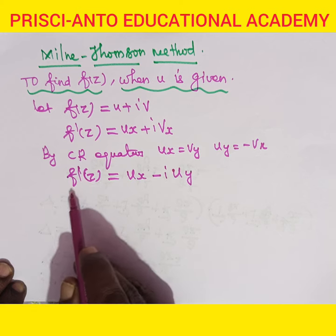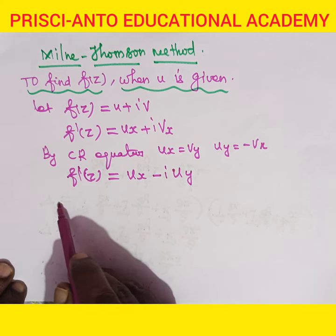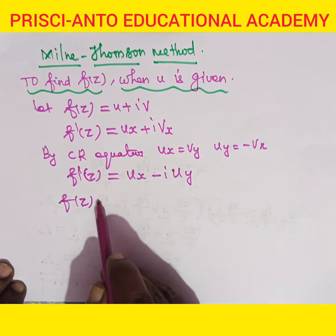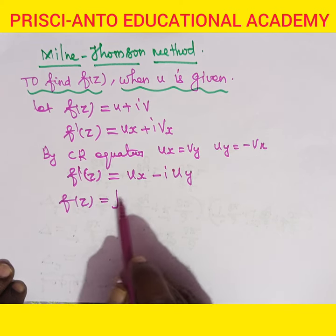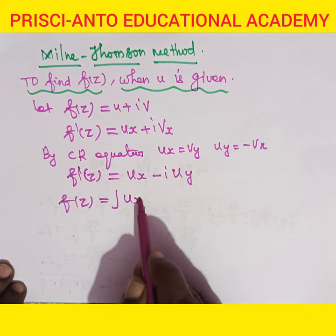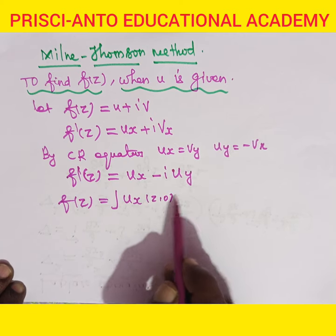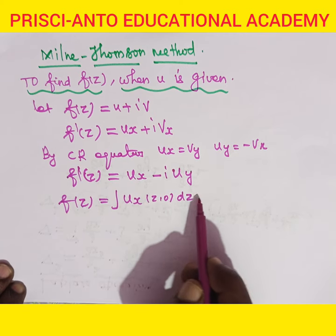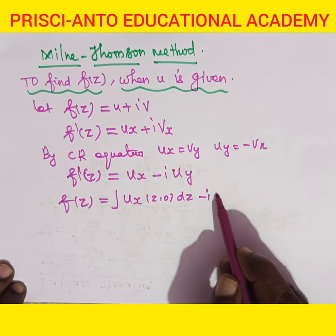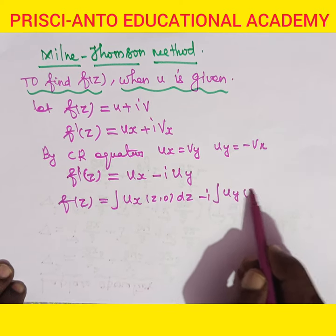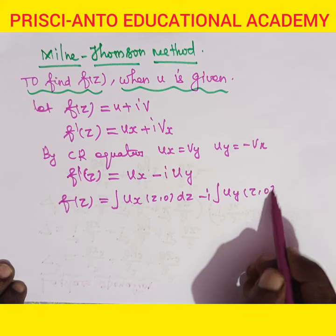So, if you are integrating this, f of z is equal to integral of ux of z comma 0 dz, minus i into integral of uy of z comma 0 dz.